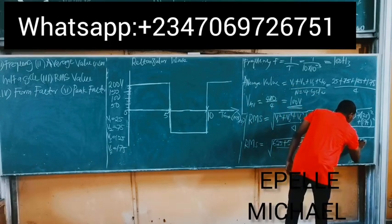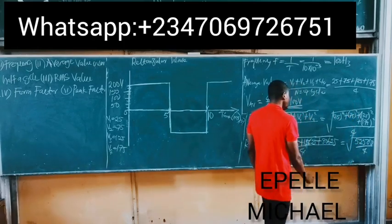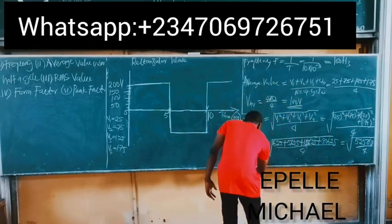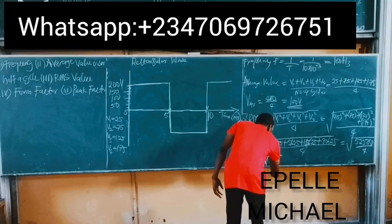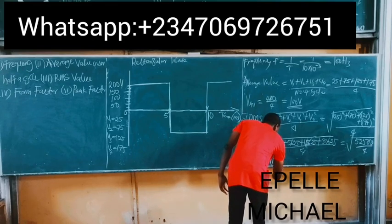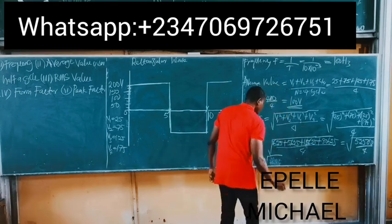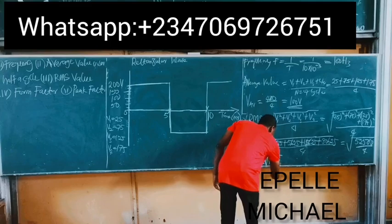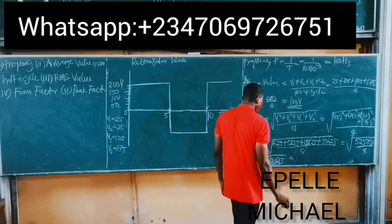52500 divided by 4. RMS is simply the square root of 13125.